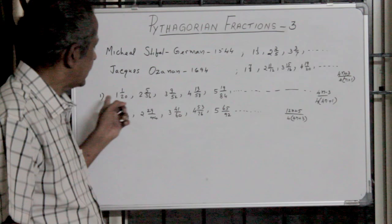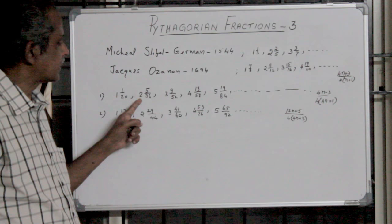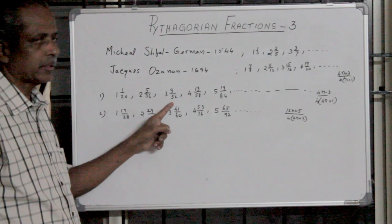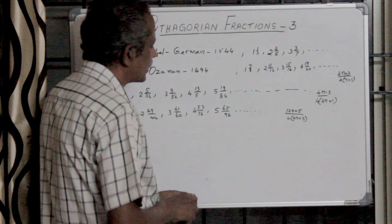Here I am introducing two such fraction sequences. One is 1 and 1 by 20, then 2 and 5 by 36, 3 and 9 by 52, 4 and 13 by 68. I can correct the short numbers.